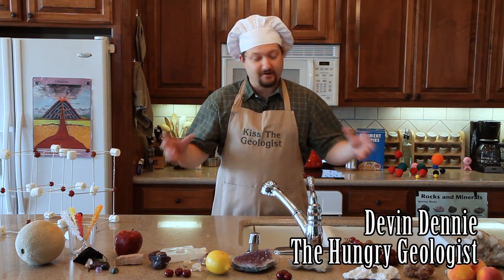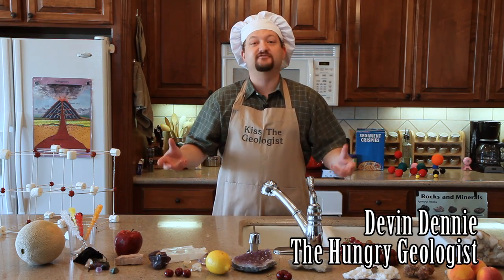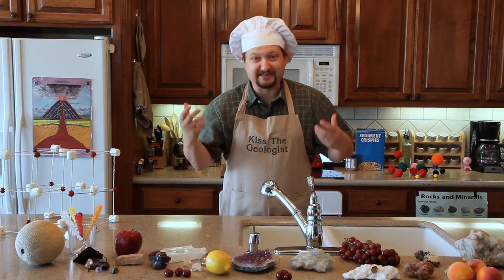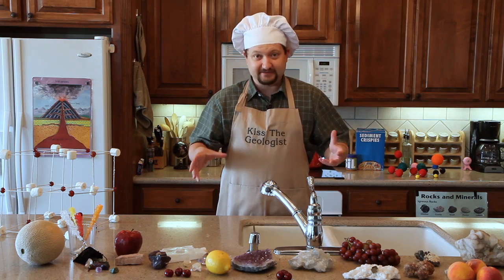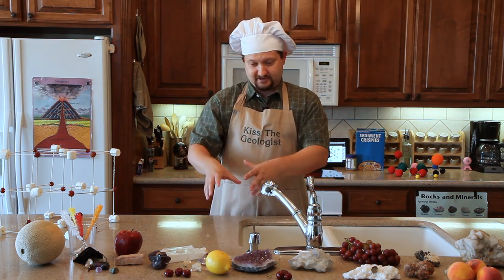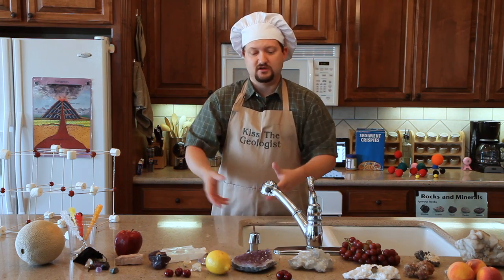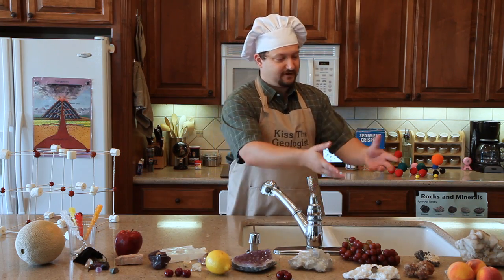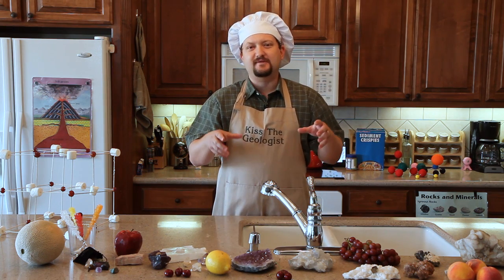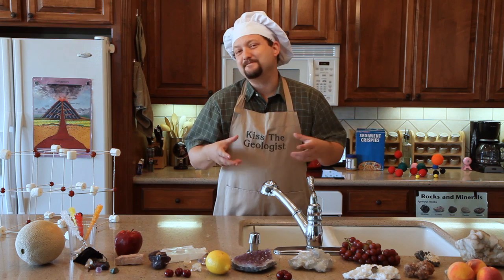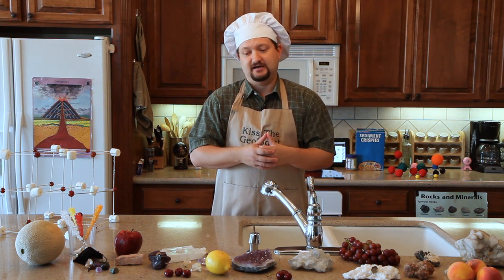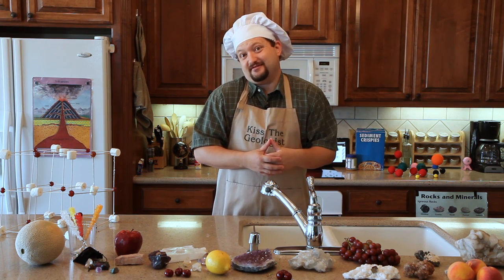Here in the kitchen we're surrounded by lots of different things that come from planet Earth, from the natural world. We can divide those things into inorganic things like rocks and minerals, or organic things like fruit and vegetables. Today we're going to talk about what is a mineral — the most basic unit of geology — and how do we identify these things?